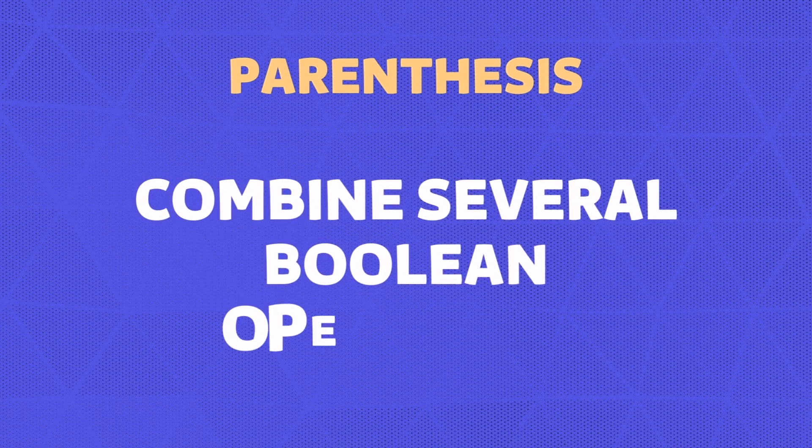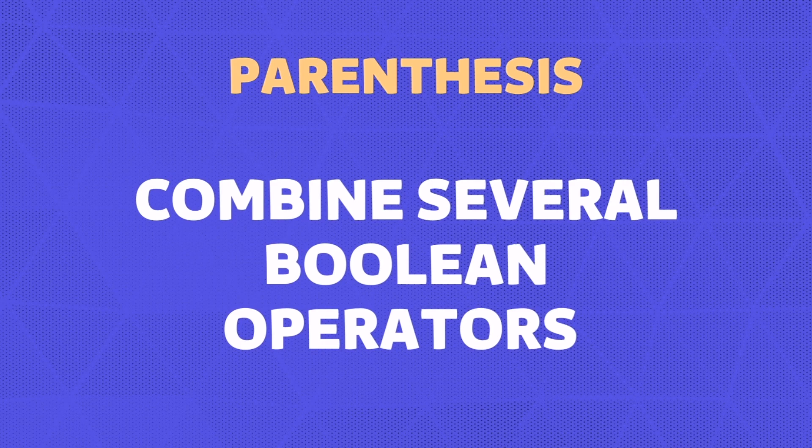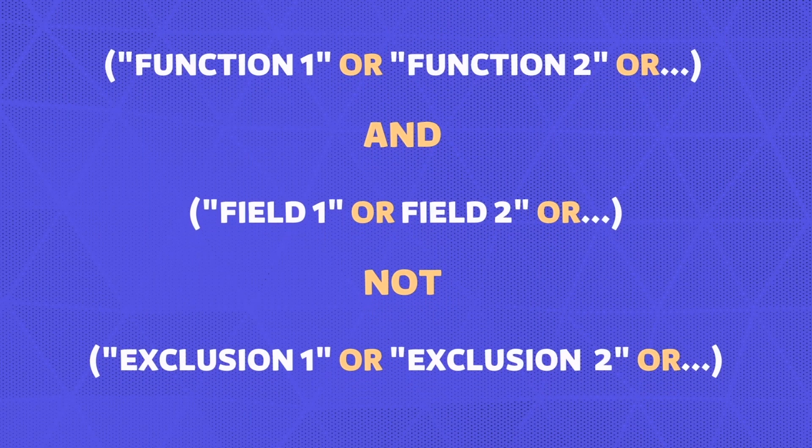Last but not least, parentheses. Parentheses allow you to combine several boolean operators to run really specific searches — like in mathematics, the operations inside the parentheses are performed first. Here is a simple template you can use: put the function-related keywords in the first parentheses, then add AND, put all the field-related keywords in the second parentheses, then add NOT, and in the last parentheses add all the keywords you want to exclude.